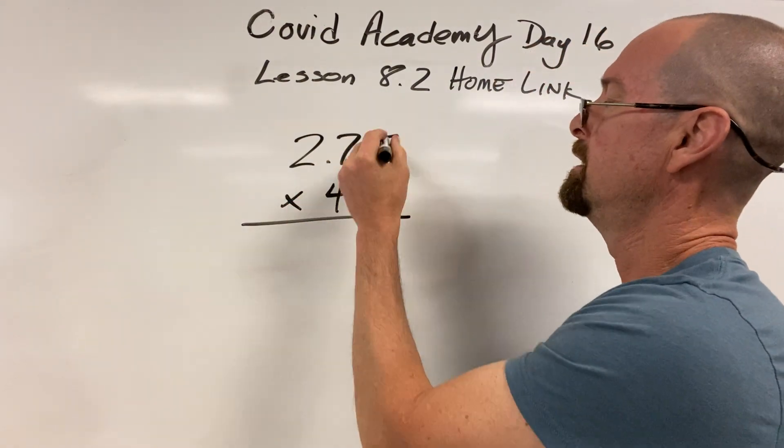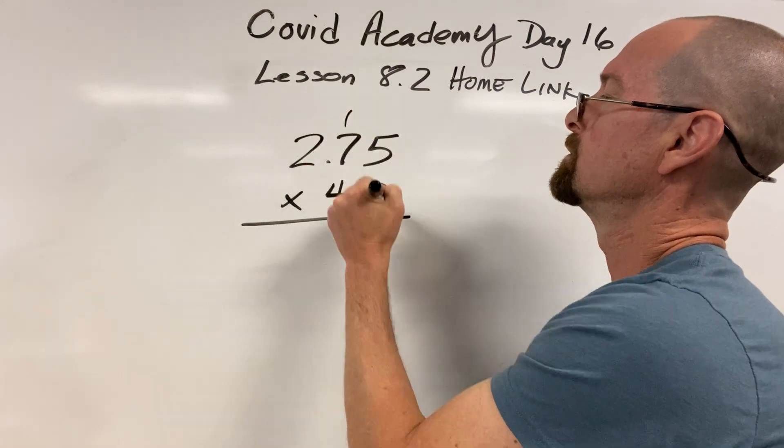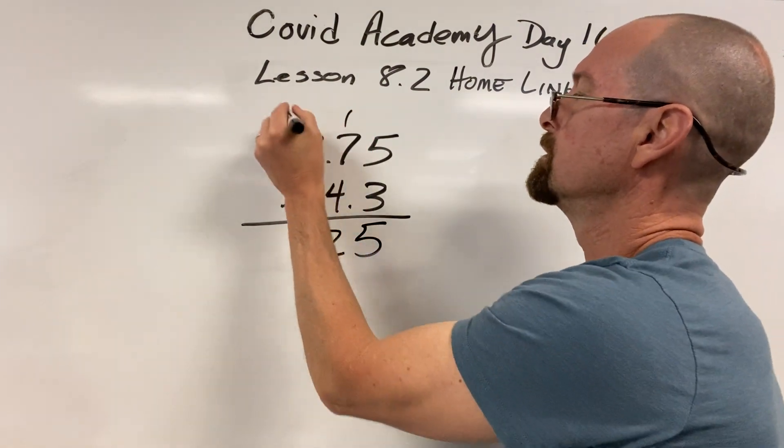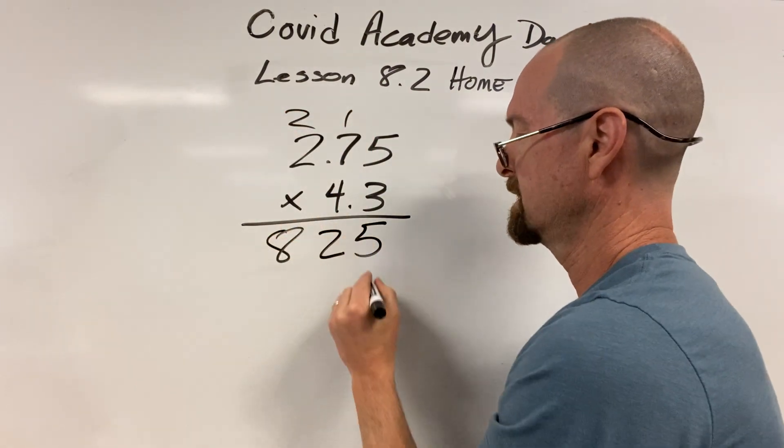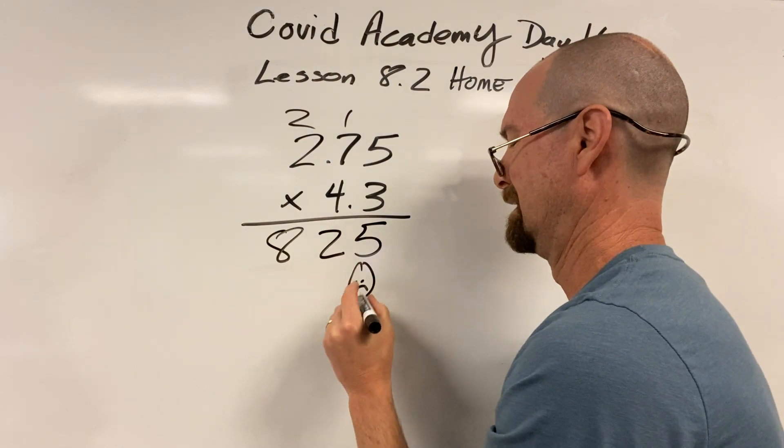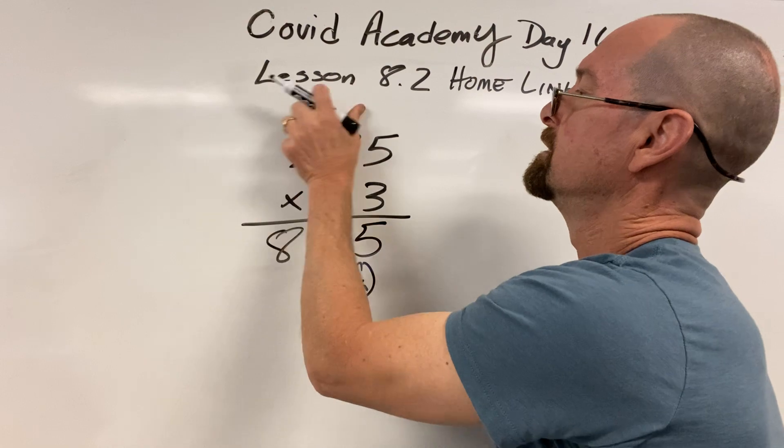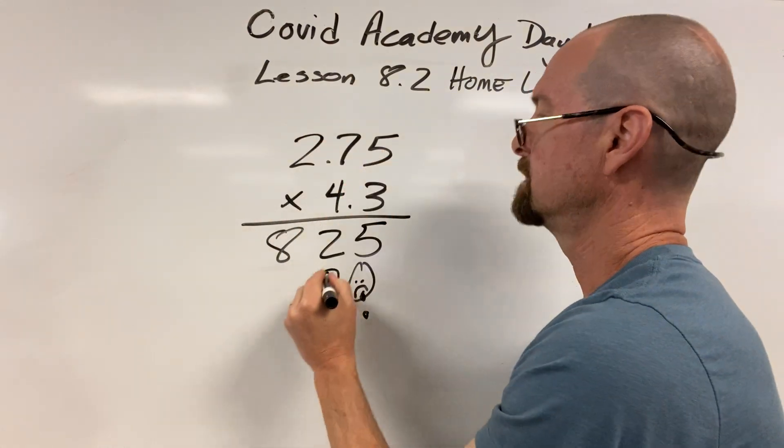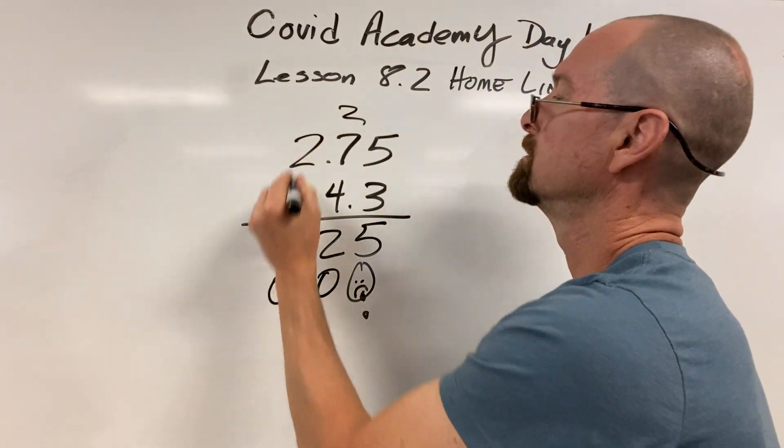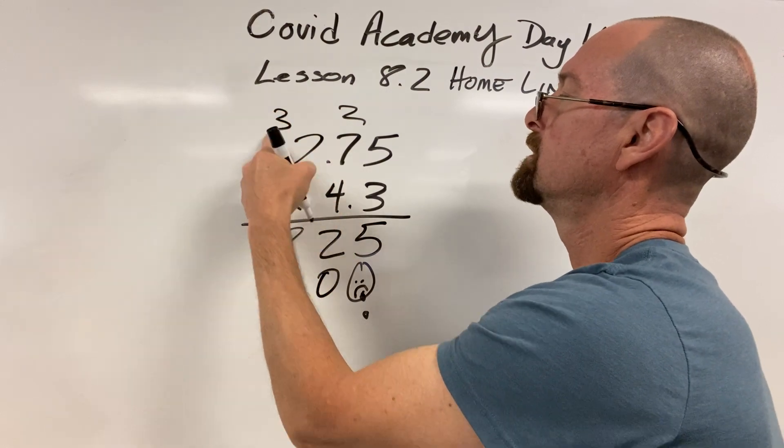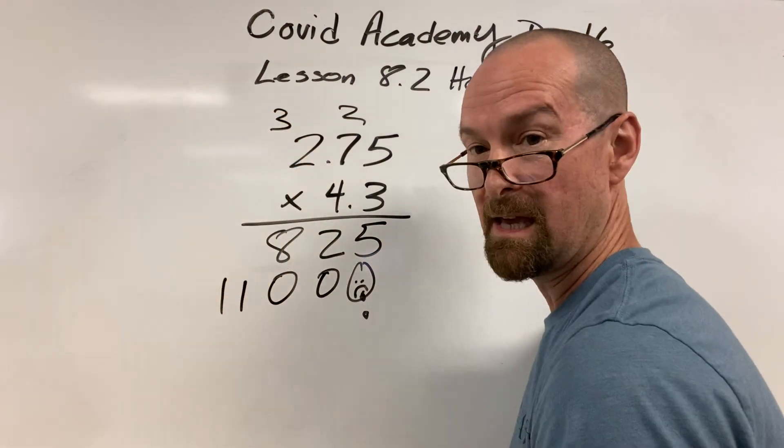So, 15, carry the 1. 3 times 7 is 21, 22, carry the 2. 3 times 2 is 6, 2 more is 8. I'm so tired of math. 4 times 5, well let's get rid of you. 4 times 5 is 20, 0, carry the 2. 28, 30, 0, carry the 3. 4 times 2 is 8, 3 more is 11. Did you get that? With me so far?